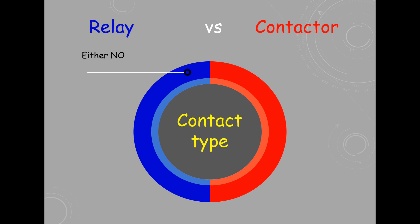Relays support both normally open or normally closed contacts depending on the conditions. Contactors are generally designed to operate under normally open contacts.